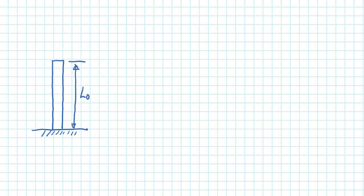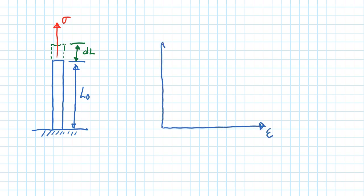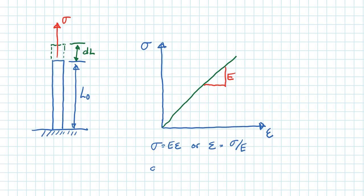We start by looking at the stresses on a bar. This bar has an initial length L0. We apply a stress and it stretches, changing in length by DL. Assuming a linear elastic relationship between stress and strain, the slope of the stress-strain curve is the modulus of elasticity E. So stress equals E times strain, or strain equals stress divided by E. Since strain equals change in length over initial length, the change in length equals L0 times stress over E.